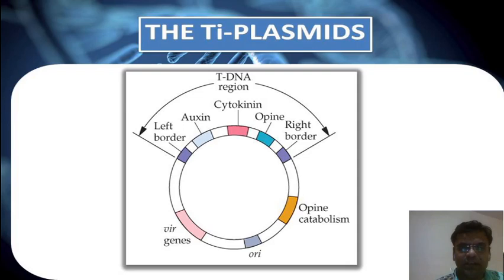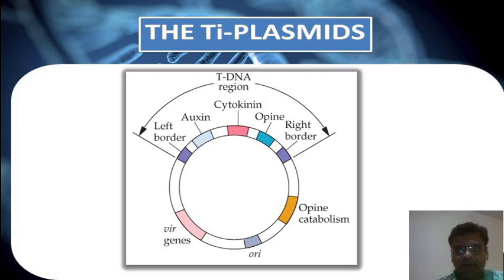The Ti plasmid has an innate ability to transmit bacterial DNA into plant cells. The gene of a donor organism can be introduced into the Ti plasmid at the T-DNA region. This plasmid then becomes a recombinant plasmid. By agrobacterium infection, the donor gene can be transferred from a recombinant Ti plasmid and integrated into the genome of the host plant.